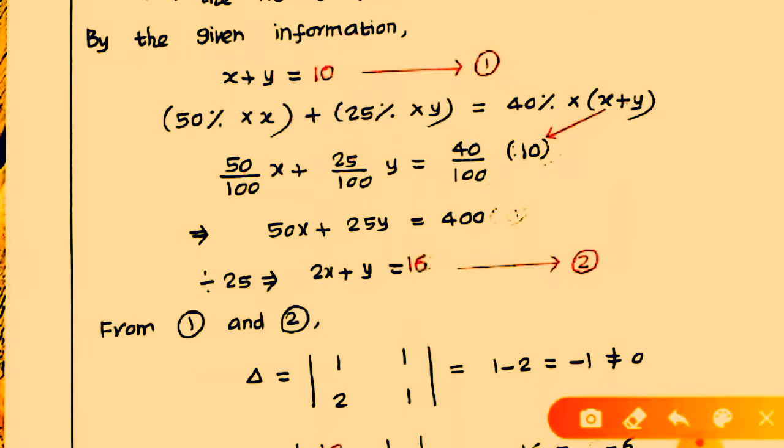Now the denominator for all the data is 100, so multiply the whole equation by 100, right hand side as well as left hand side. So 100 cancels. Therefore, 50X plus 25Y equals 40 times 10, which is 400. If you divide by 25: 50 divided by 25 is 2X, plus 25Y divided by 25 is Y, equals 400 divided by 25, which is 16. This is equation 2.